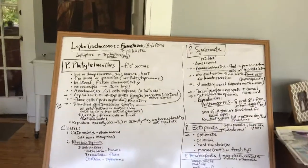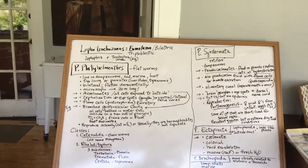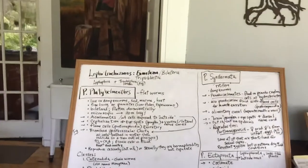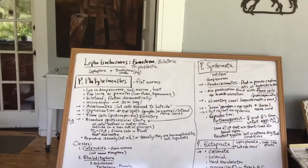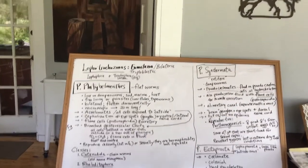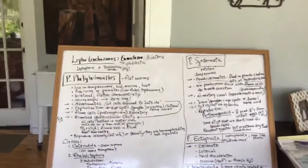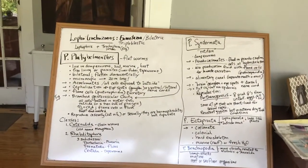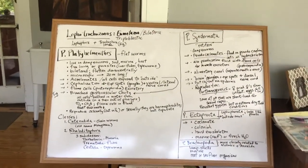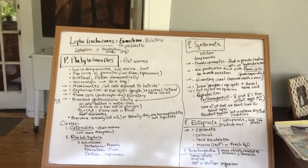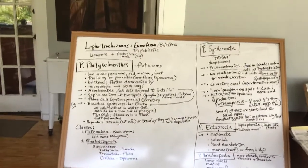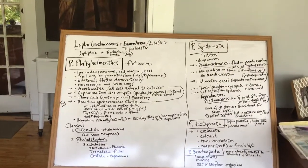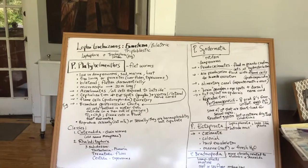The next group of animals we're going to talk about are the Lophotrochozoans. These are eumetazoa, meaning they have two tissue layers. They are in the group Bilateria and they are triploblastic, meaning they have three tissue layers.